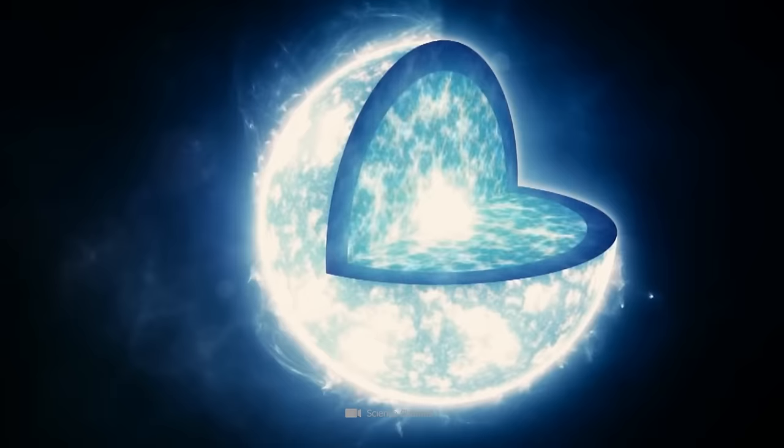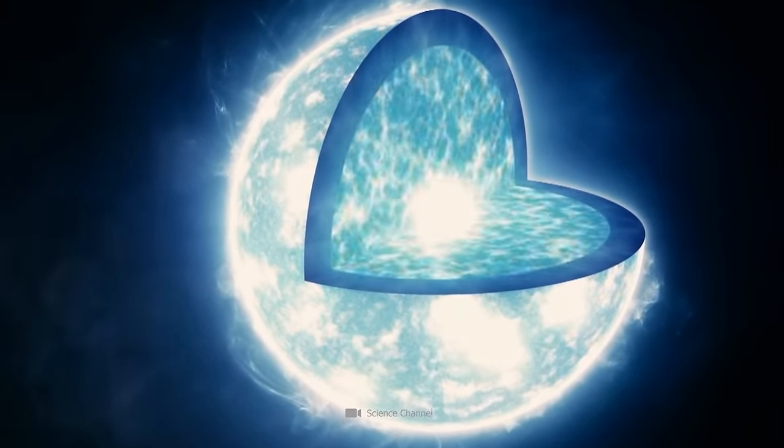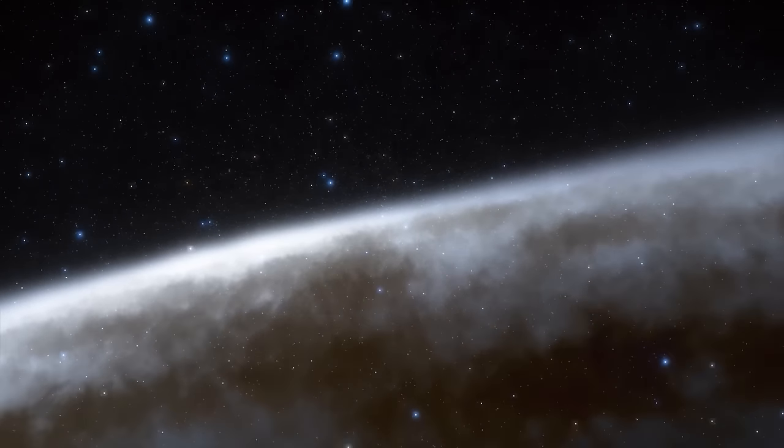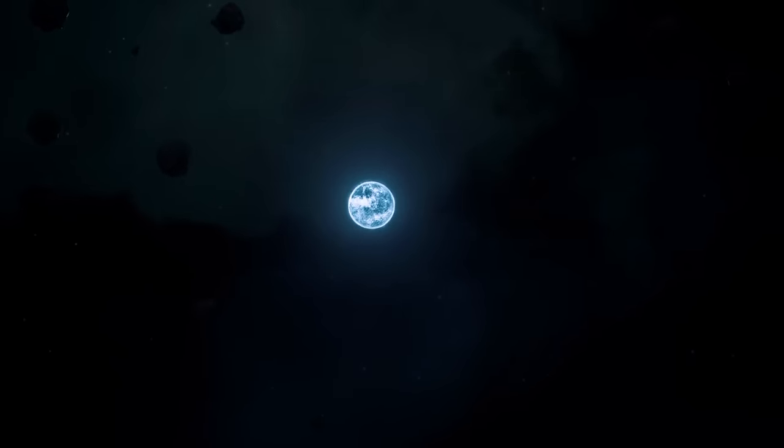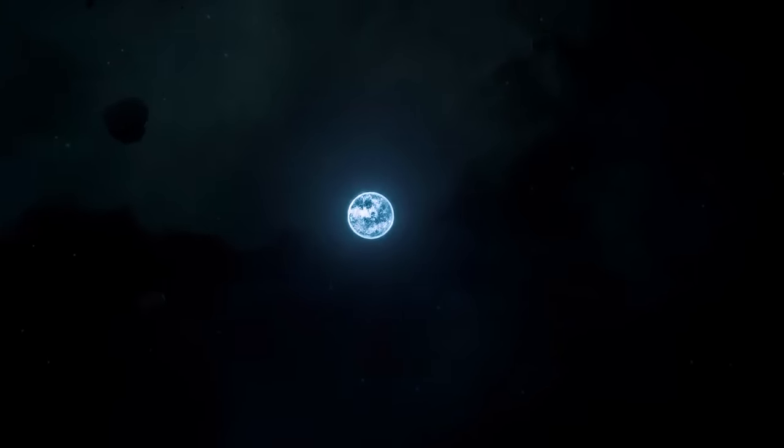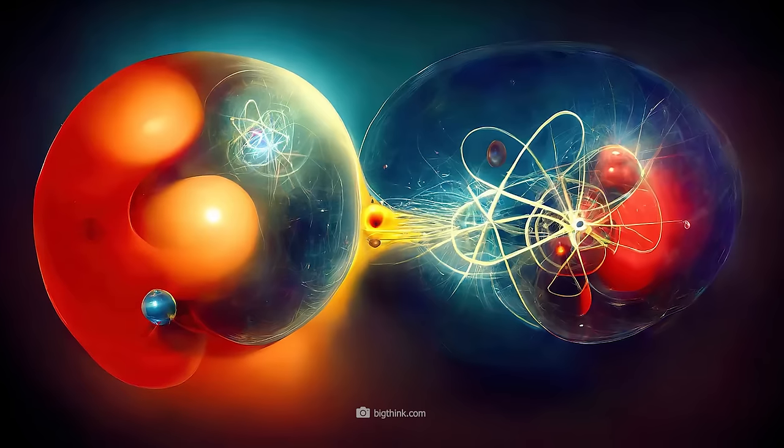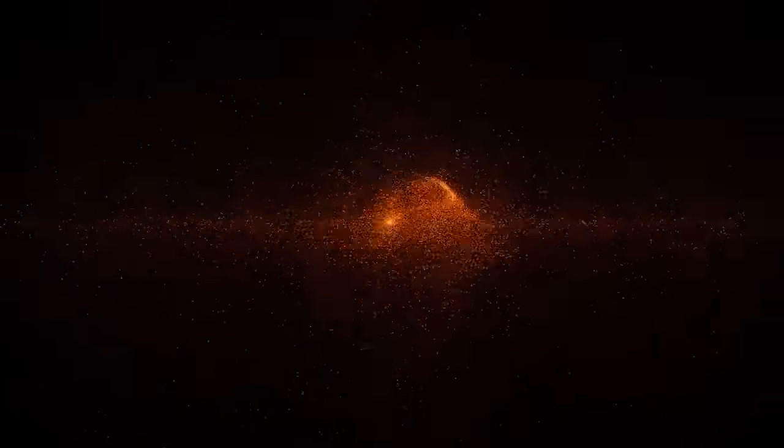Some scientists believe that the interior of a neutron star consists entirely of normal neutrons, while other theories suggest that inside this star the components of the neutrons, quarks and gluons, actually move freely in a kind of plasma. It's possible that the interior of these stars consists of even more exotic forms of matter, such as the hyperons, which in turn are composed of strange quarks. These particles are strange because they move in a way that can hardly be described scientifically.